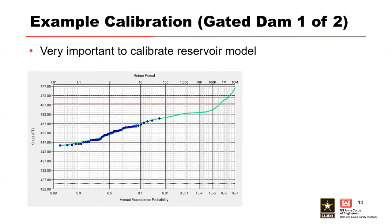Let's revisit our estimate of the annual exceedance probability at the top of flood control. Given our calibrated model results, the estimate changed from about 4e-6 to about 8e-4 — a change of more than two orders of magnitude, which could have a significant effect on the risk estimate. This is why it's so important to calibrate the reservoir model to obtain good agreement with the observed events.